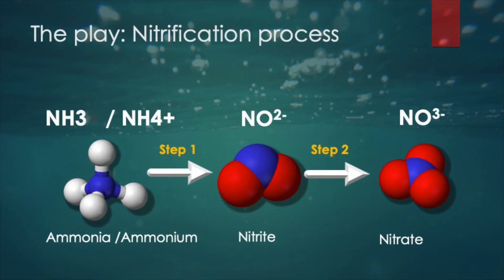Now that we know the actors of the play, we can look at the script and the plot. The process consists of two steps, and we will now look in detail at what the eye cannot see but is happening constantly in our tanks or ponds. Every element in this picture contains a single nitrogen atom, pictured in blue. As this nitrification process is part of the nitrogen cycle, this does not come as a surprise.